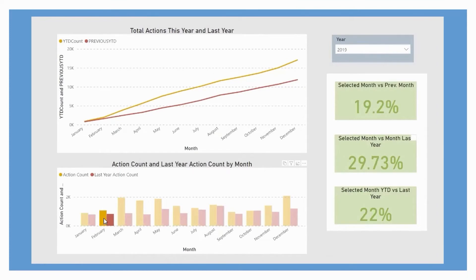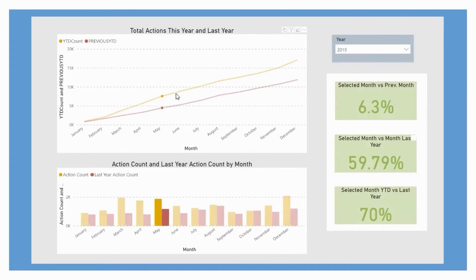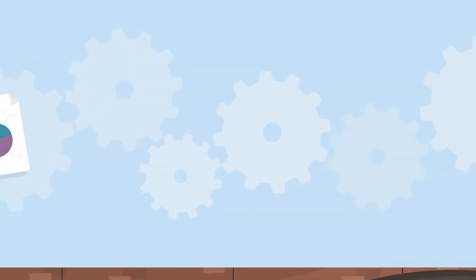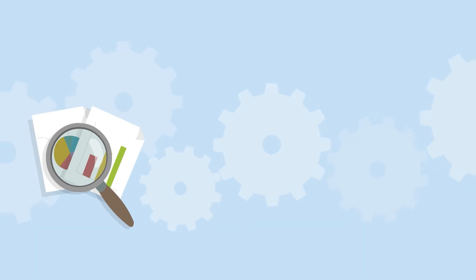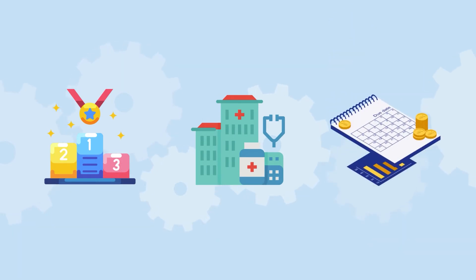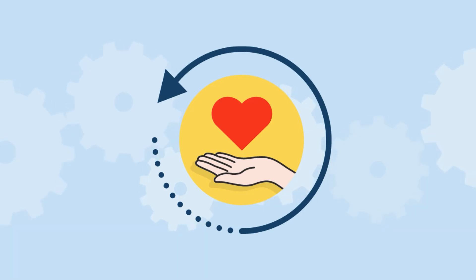Cross filters are automatically enabled to provide multiple views of a single data set, so you can filter by any data point to gain unique insights. Combine or analyze your constituent and fundraising data alongside external information such as athletics, patient, or financial data. This gives you a well-rounded view of your donors and the opportunity to identify helpful patterns you couldn't pinpoint before.